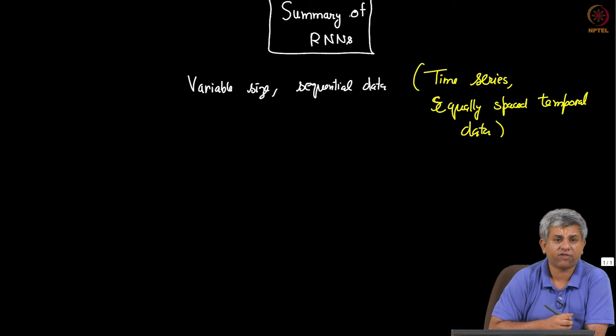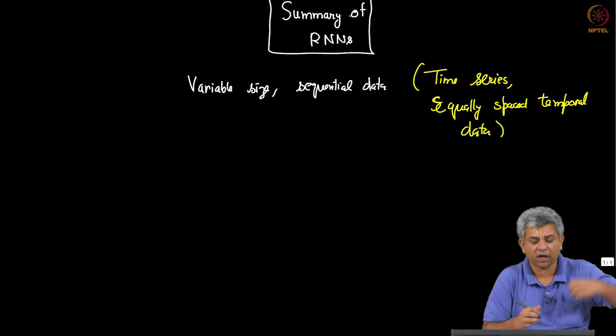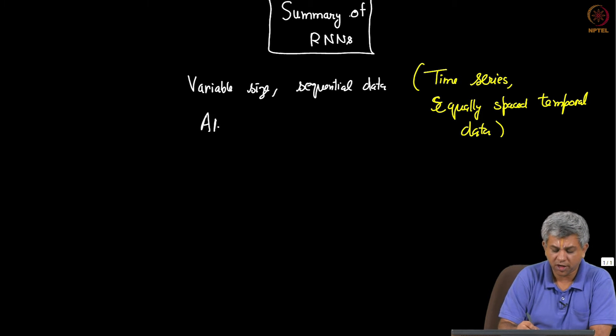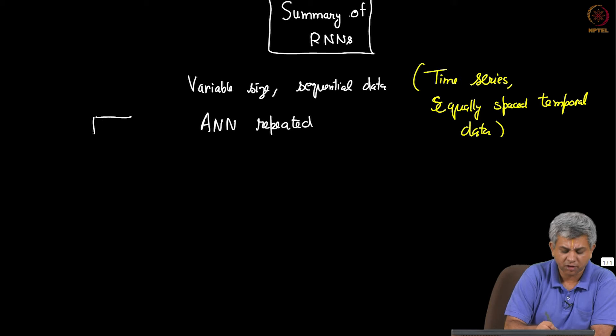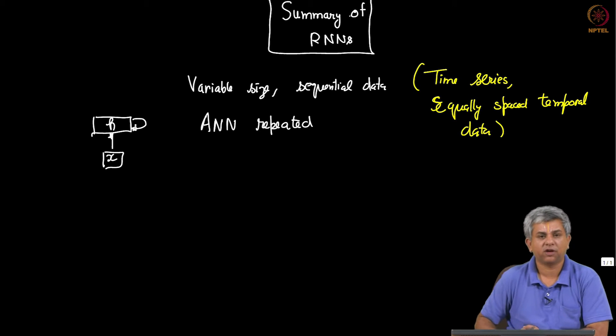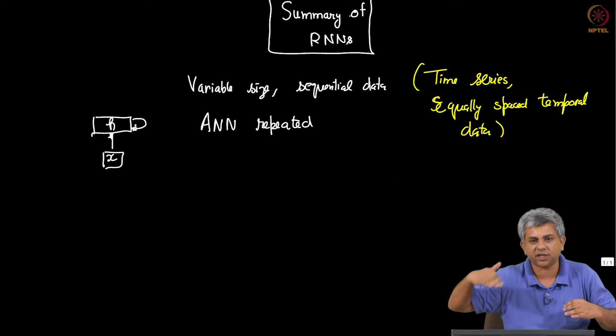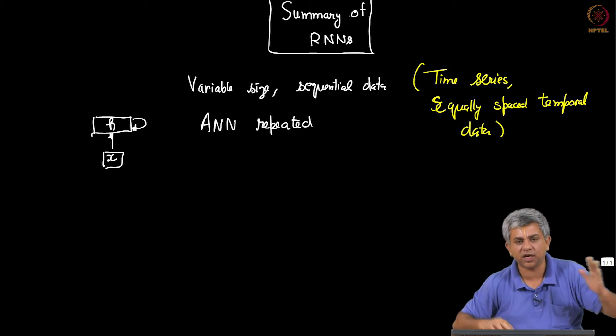The basic structure of RNN is simply an ANN repeated. Which is why sometimes you will see this figure, X, H looping on itself. Basically means if you unroll it, you have X, H, X, H, X, H going sequentially again and again.